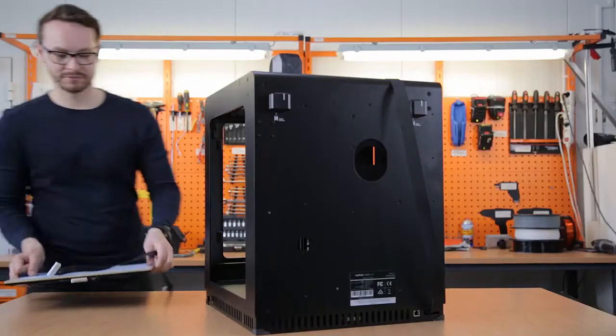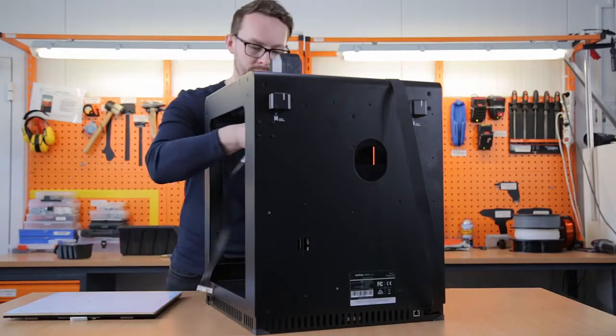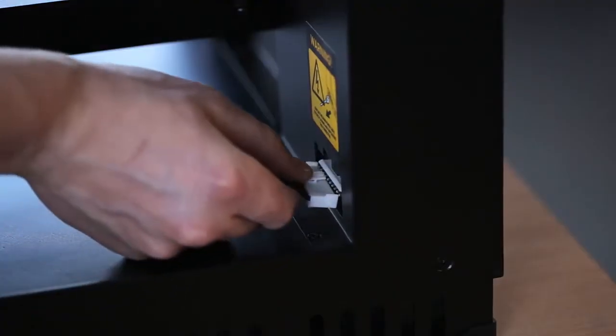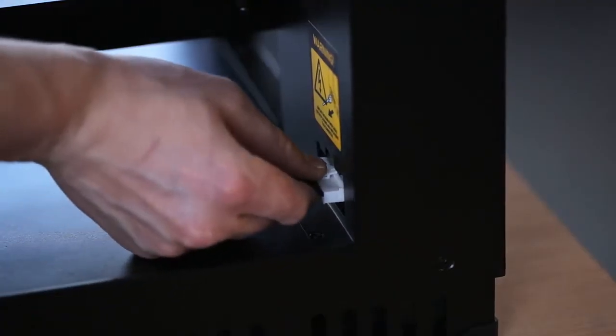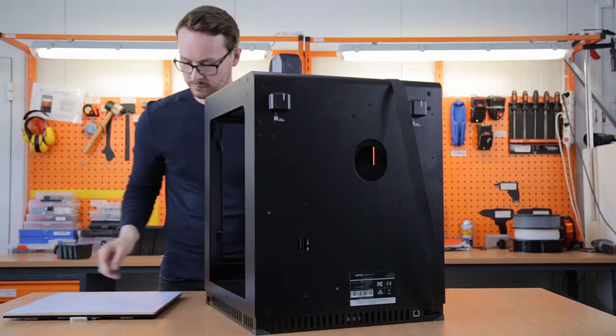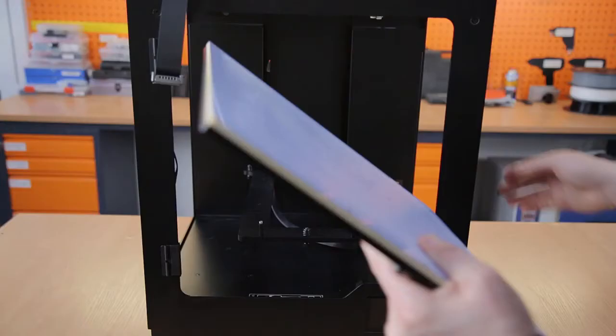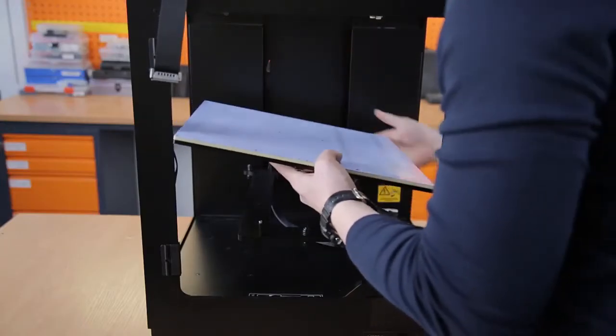Next, you can connect the platform cable to the inside of the printer, and later connect the other side of the cable to the build platform. Install the build platform onto the bolts of the heat bed mount.